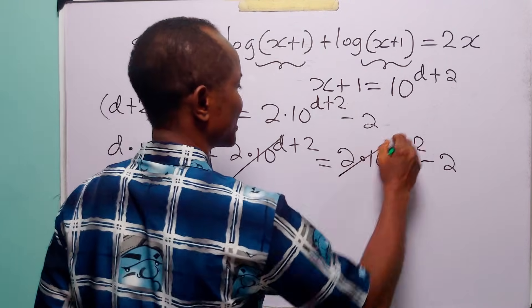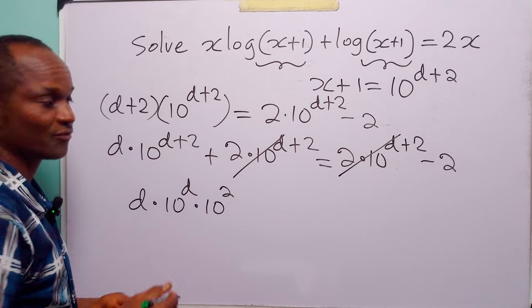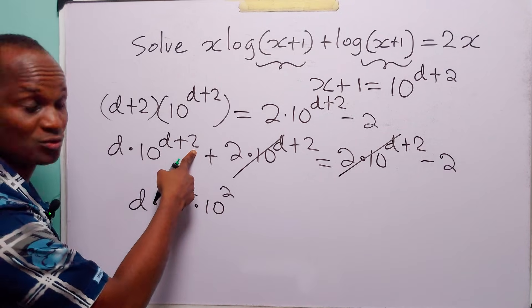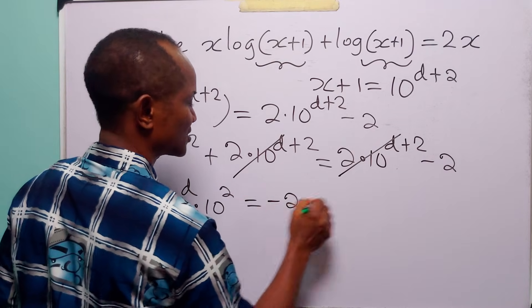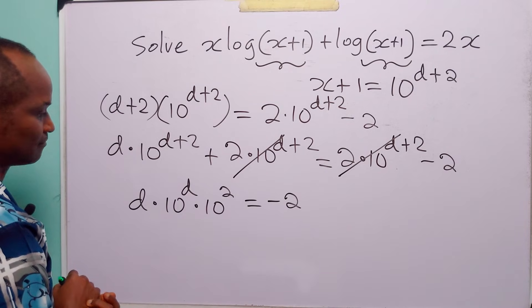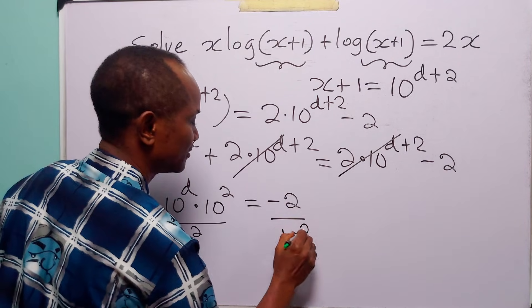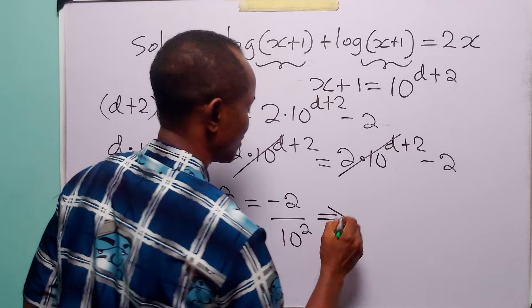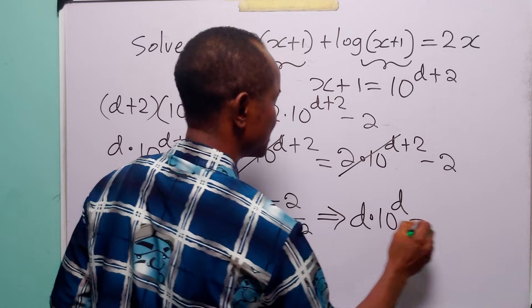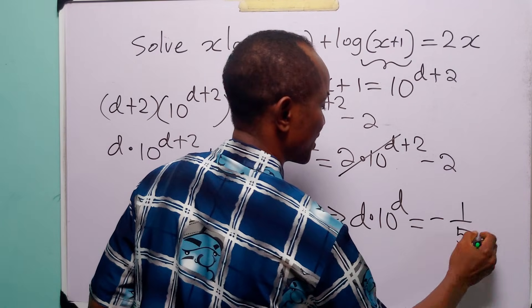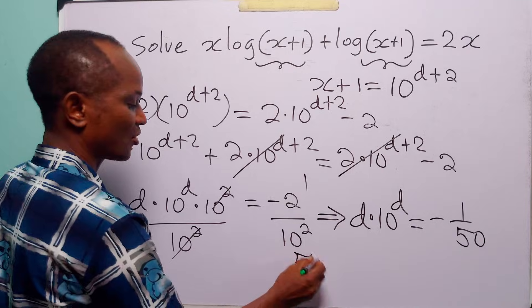We subtract 2 times 10 to the power d plus 2 from both sides, which cancels those terms. We are left with d times 10 to the power d times 10 to the power 2, equal to minus 2. Dividing both sides by 10 to the power 2, and using the fact that 10 squared is 100, we get d times 10 to the power d equals minus 1 over 50.